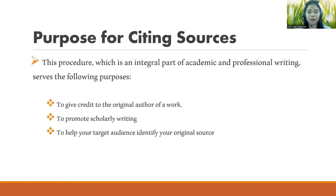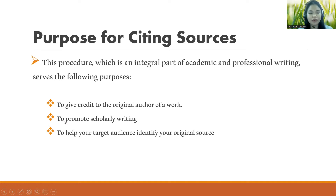Another purpose for citing sources involves three main purposes. This procedure, which is an integral part of academic and professional writing, serves the following purposes: number one, to give credit to the original author of a work; second, to promote scholarly writing; and number three, to help your target audience identify your original source.